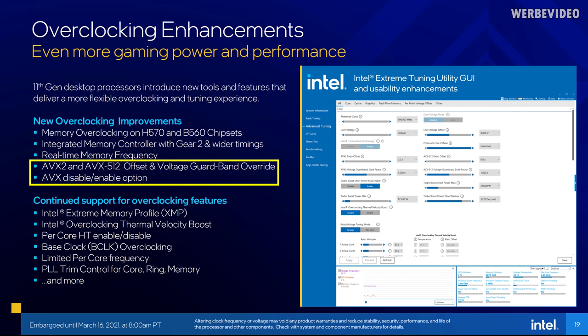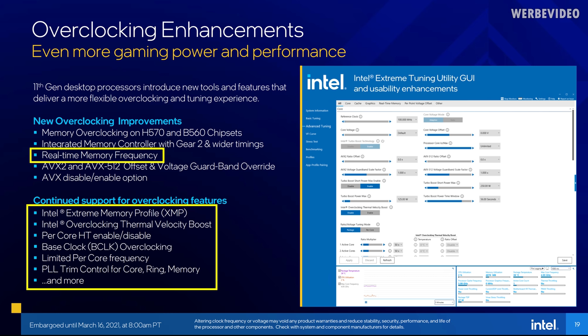Additional features such as disabling AVX completely or using AVX offsets are very useful, though I don't really see why you would even have AVX-512 on the 11900K. Real-time frequency allows you to change your memory settings on the fly via Intel XTU while your system is up and running — that's a very cool feature for overclockers. Disabling HT per core can also be useful for some benchmarks like 3DMark 06, but it's a very specific thing for extreme overclockers. I'm still very happy Intel is putting focus on developing these special features.